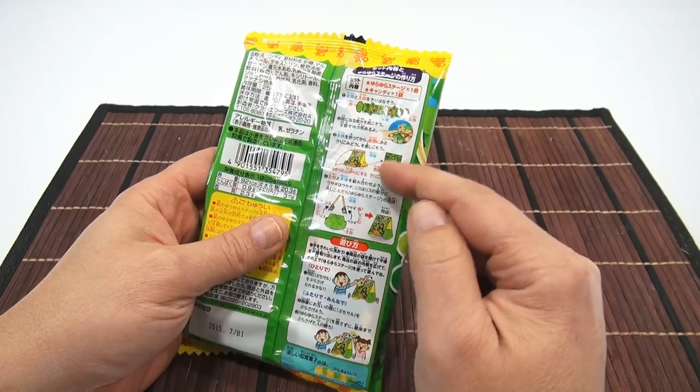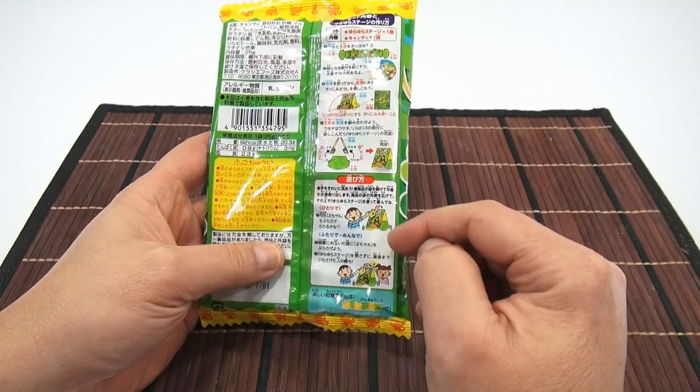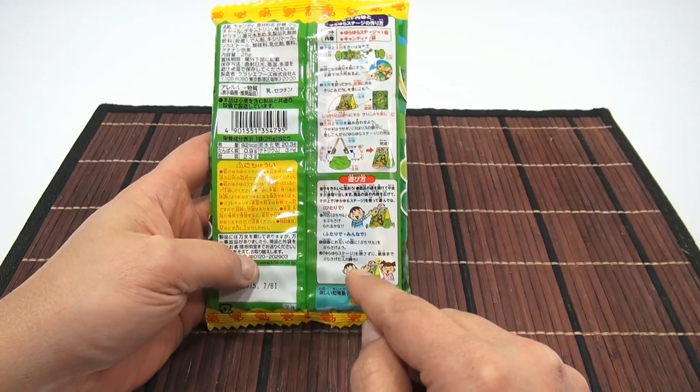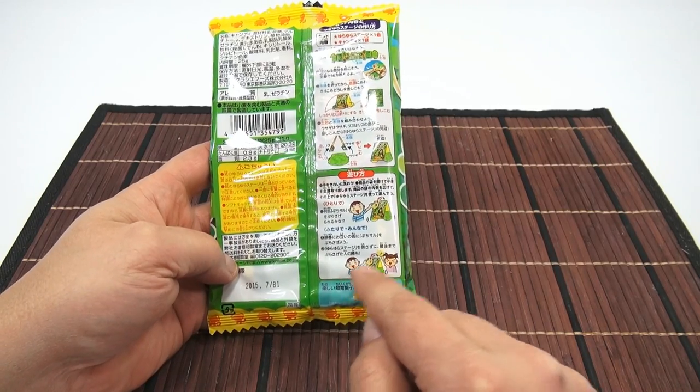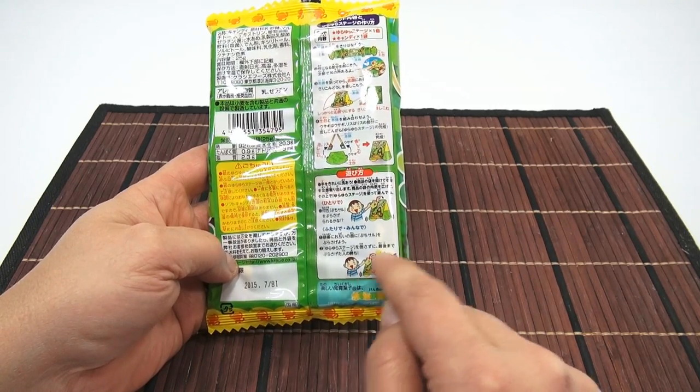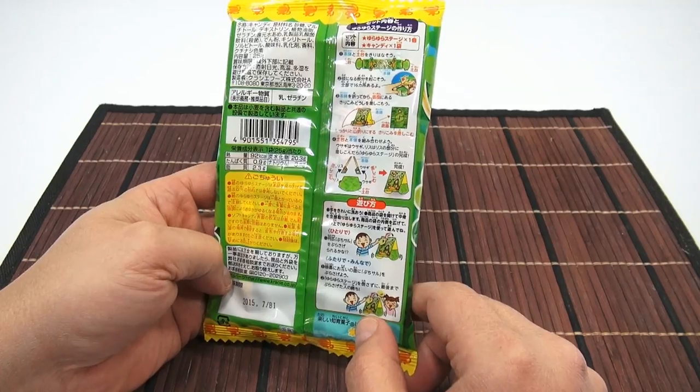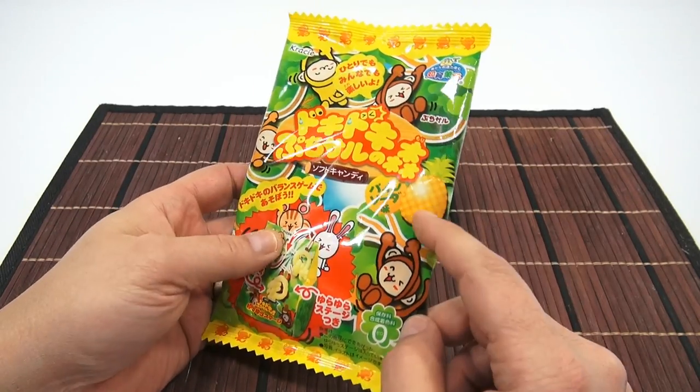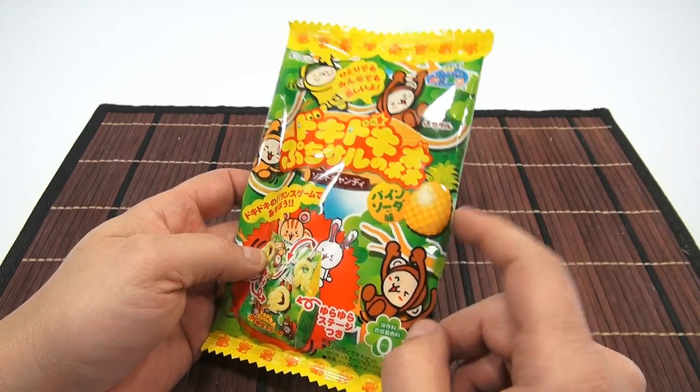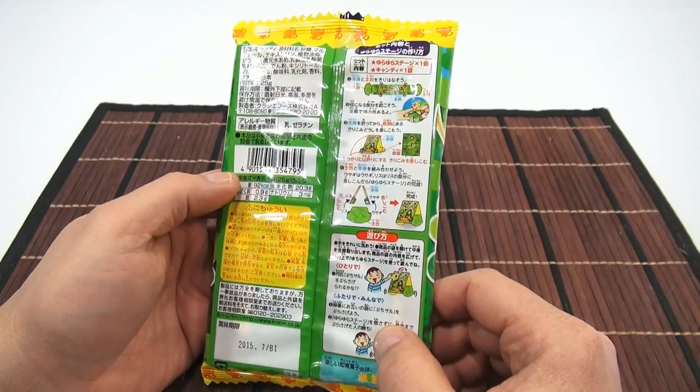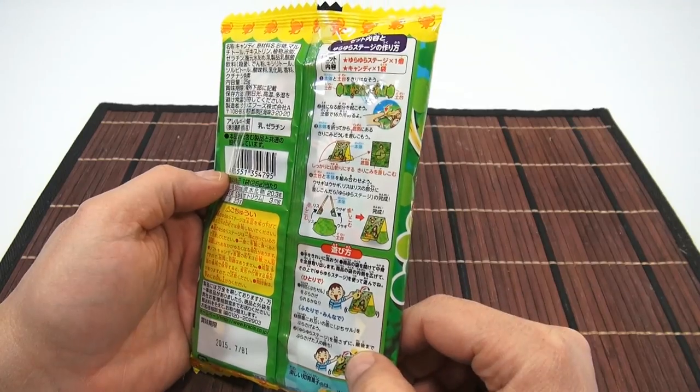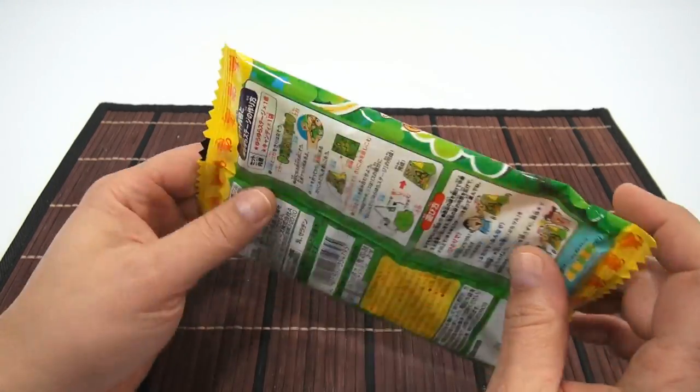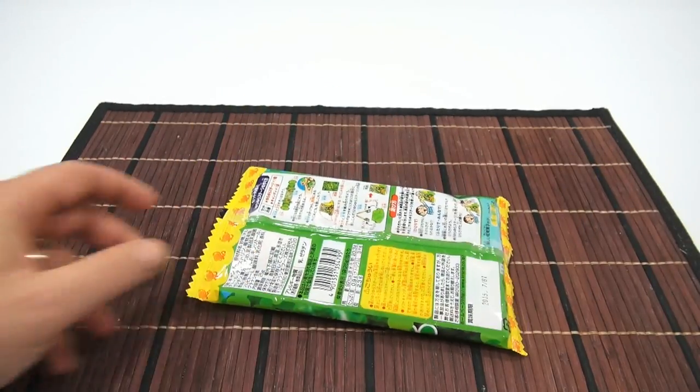And plus, you see all the instructions in here. Building, cutting, making, and then hanging your little monkeys on there. So one person on one side, one person on the other, and then it's a game. I bet it determines who gets to eat what. And flavors look like pineapple. I don't know, just got to get it out of the packaging and check it out.